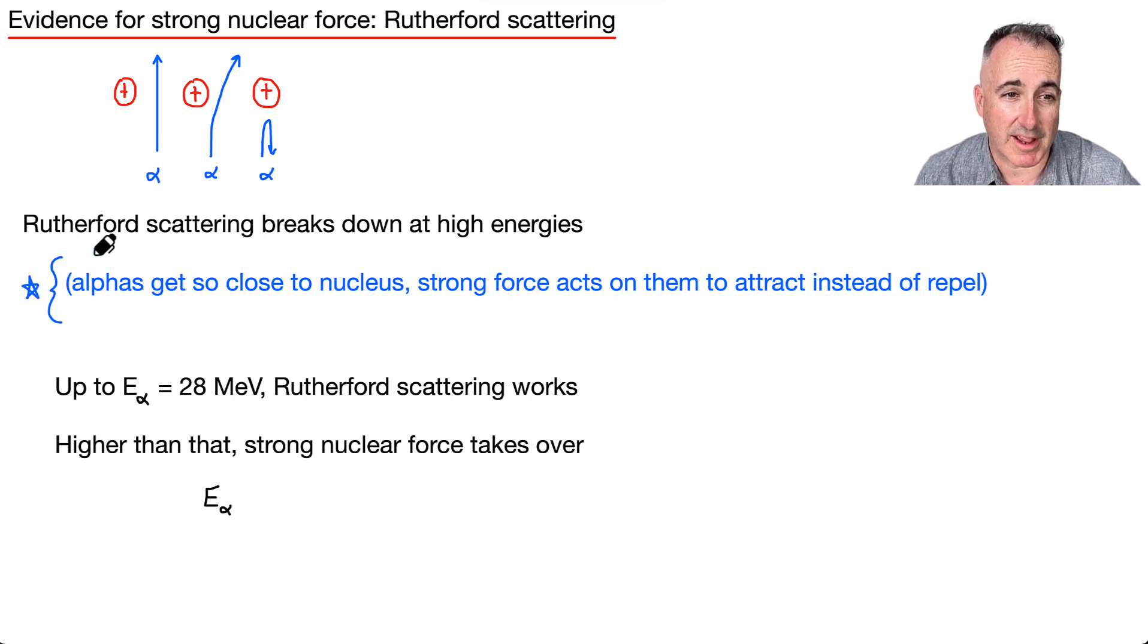What I mean by that is that as you get your alphas with more and more energy, for example as they're coming in faster and faster, then they get closer and closer. We learned this distance of closest approach. They get closer and closer to the nucleus. Up to alpha energy of around 28 mega electron volts, Rutherford scattering works.